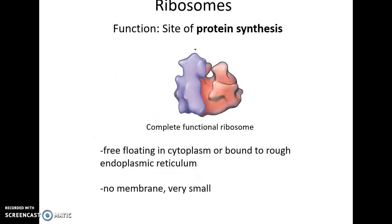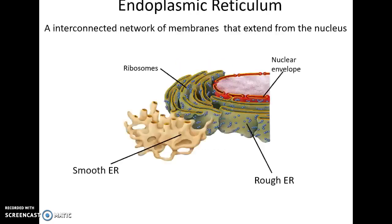Ribosomes are organelles made of protein and RNA that carry out protein synthesis. They can be free-floating in the cytoplasm or bound to the rough endoplasmic reticulum.